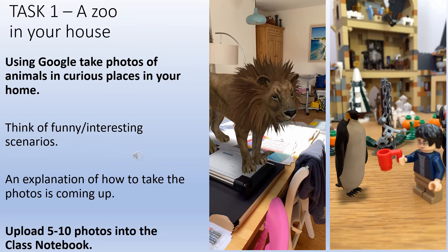The first task is to take photos using Google Animals 3D, and there is a video on the next slide showing you how to do that. The photos you take should be interesting and tell a story — try and make the photos funny or include some kind of scenario. Don't just snap once you've got the animal up on your camera. When you've finished taking the photos, please upload them and then screenshot where you've uploaded them and save them into the class notebook, which will be explained in another video.